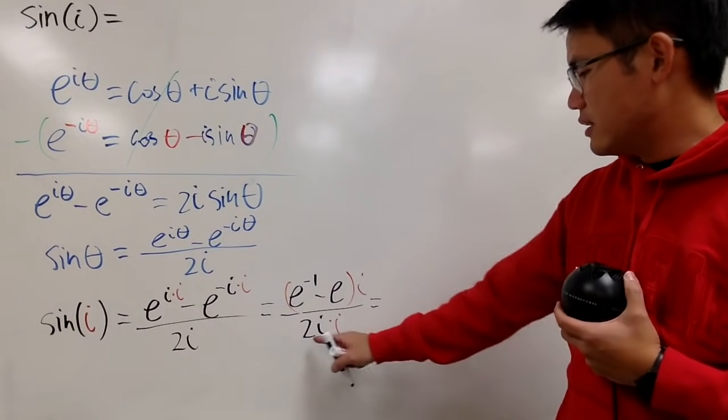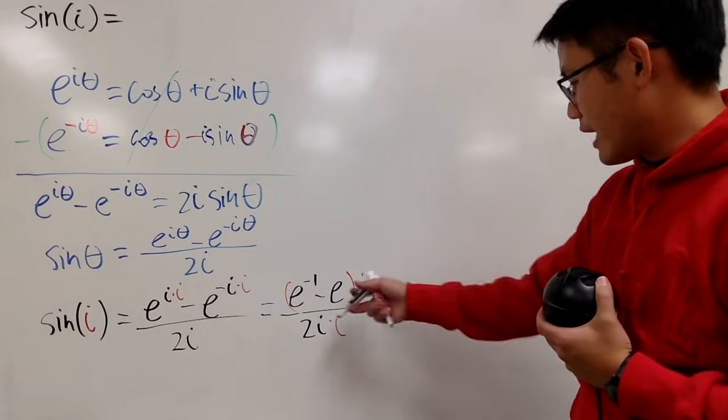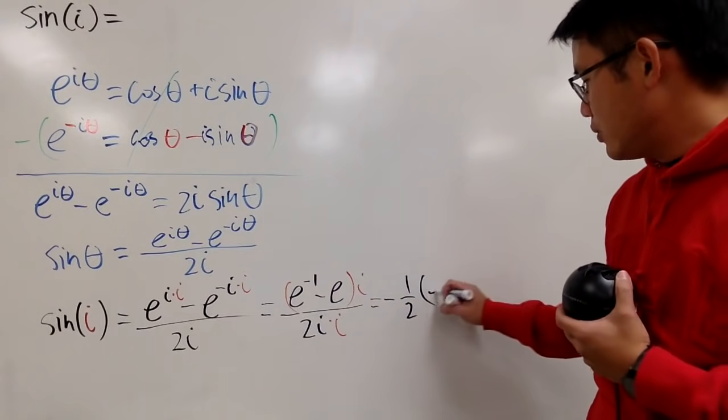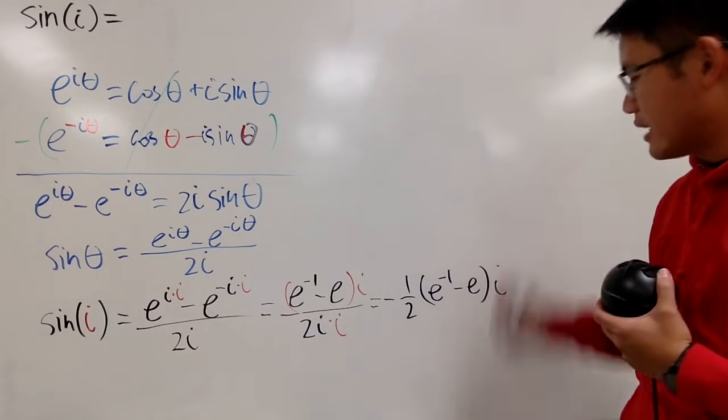Well, we see that this is going to be negative 1 half. I'll just put it down like this, and then here we have e to the negative 1 minus e, and then you have the i like that.